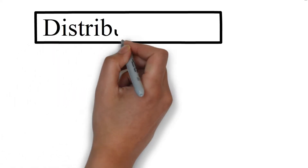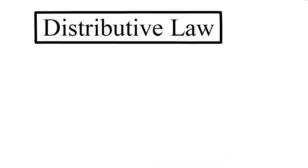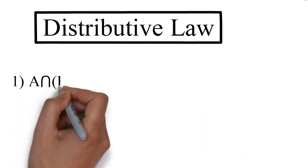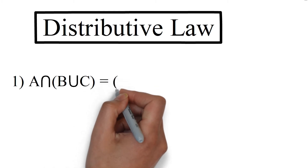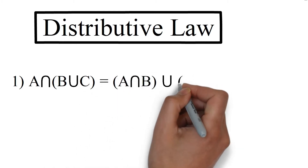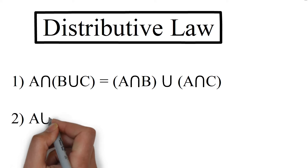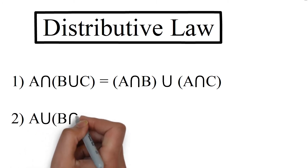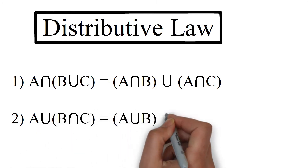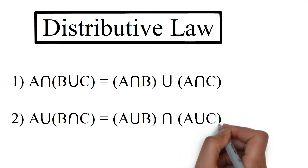The distributive laws of sets are: first, A intersection (B union C) equals (A intersection B) union (A intersection C). Second, A union (B intersection C) is equal to (A union B) intersection (A union C).